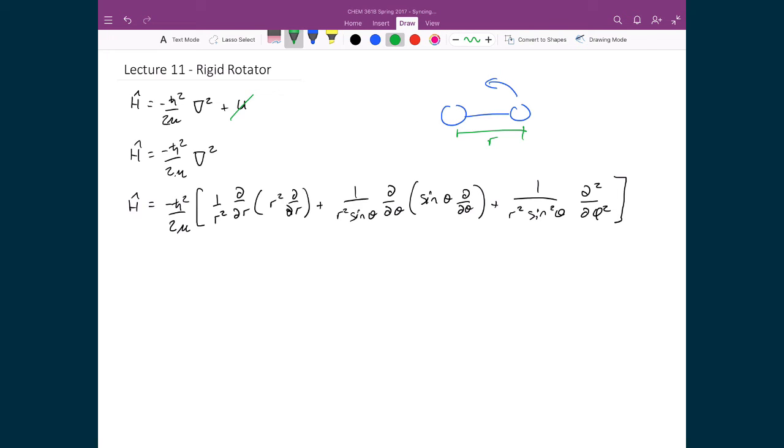So because of that, any term where we have a rate of change of the radius, like this first term right here where we have these d/dr terms, we know that when we take the derivative with respect to r and the r isn't going to change at all, then we know that this term is just going to go to 0. It's going to disappear completely since it's not going to change with respect to r. So we're only left with two terms now.